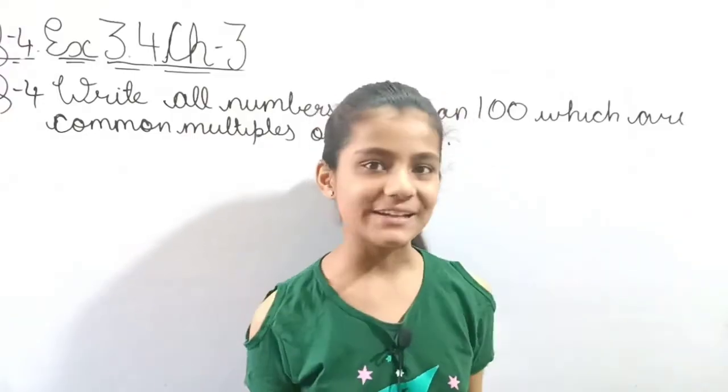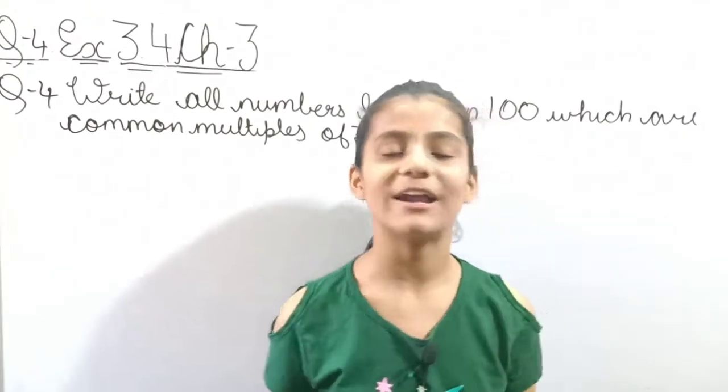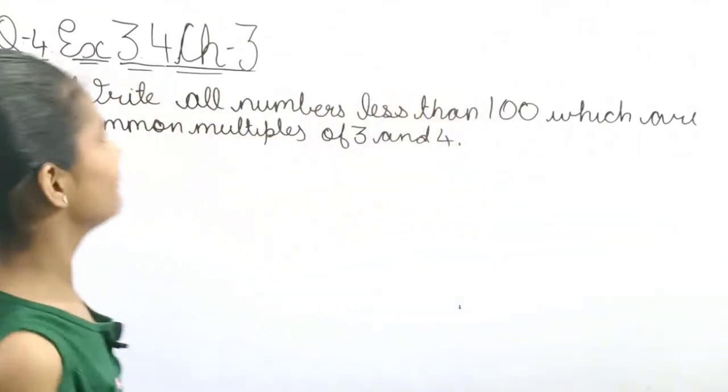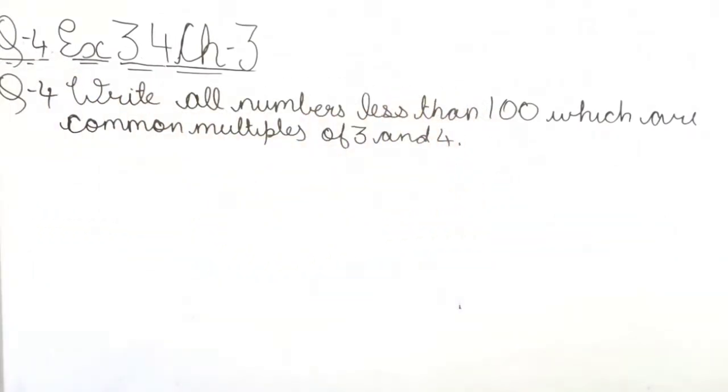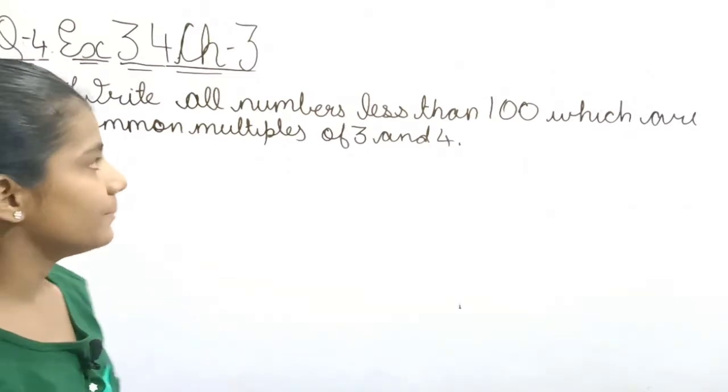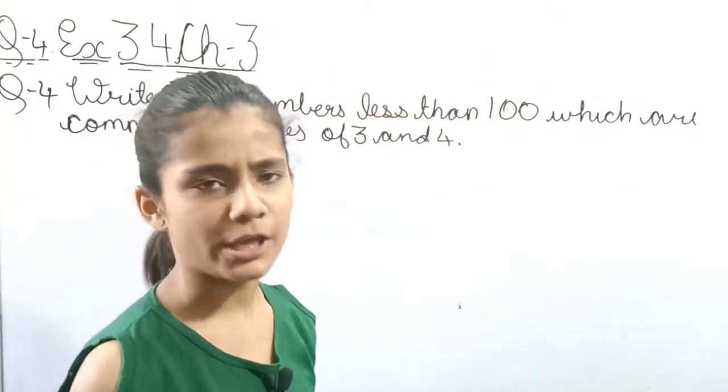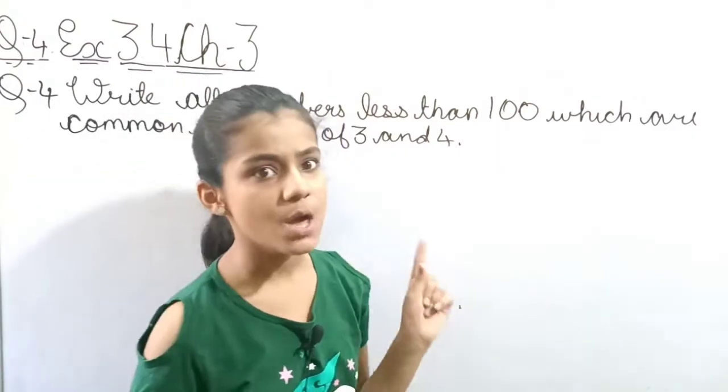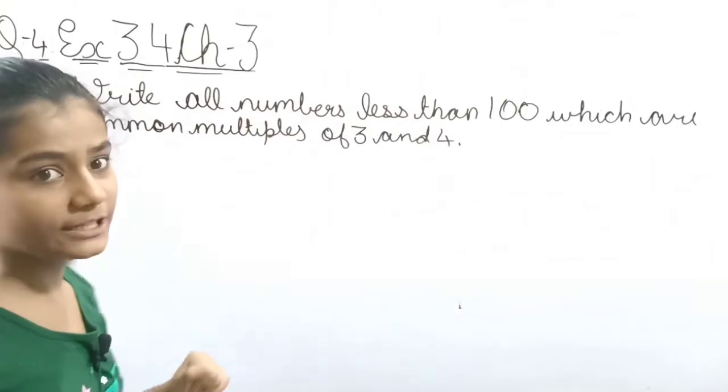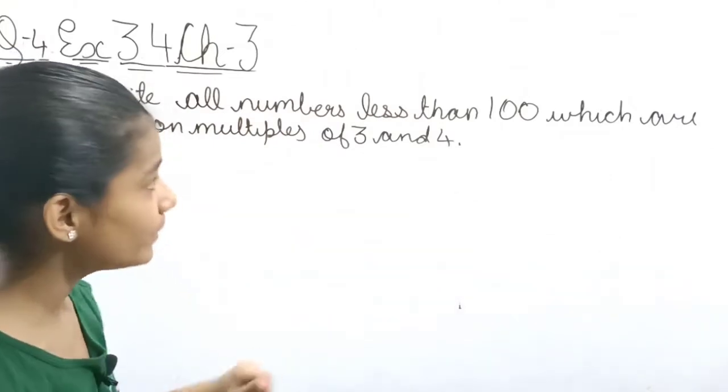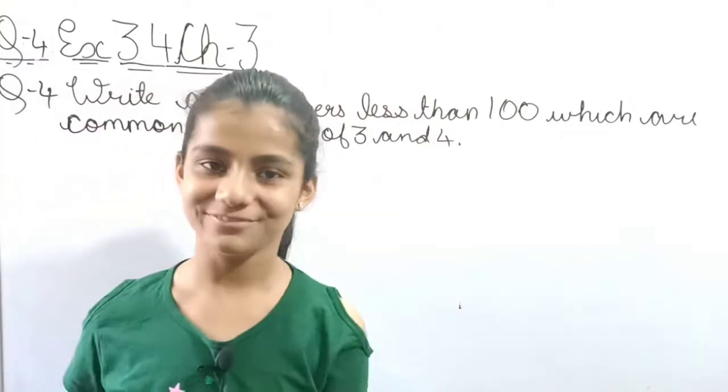Hello everyone, welcome back to my YouTube channel. Hope you are doing well. Today I am going to solve question number 4 of exercise 3.4. In this question, we have to write all numbers less than 100 which are common multiples of 3 and 4.